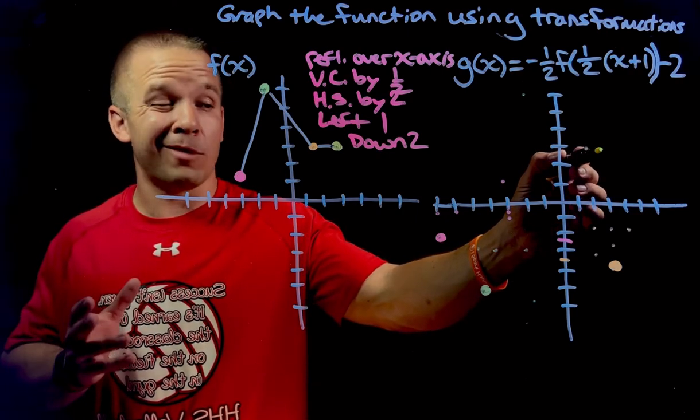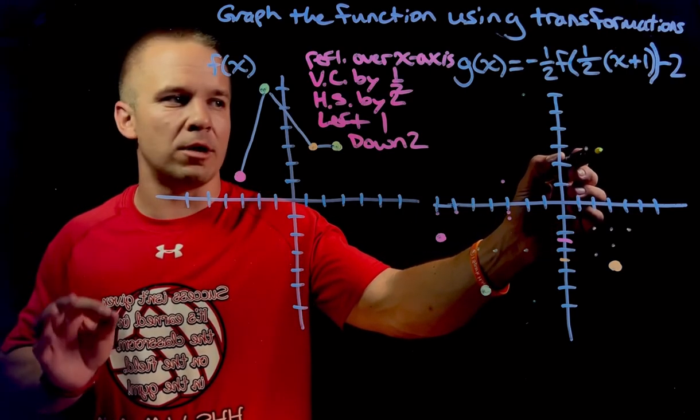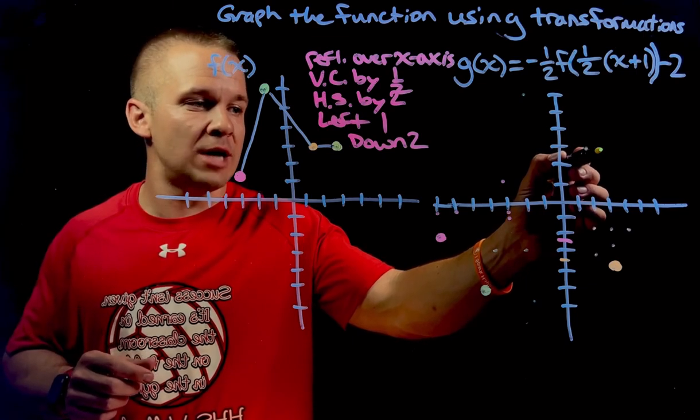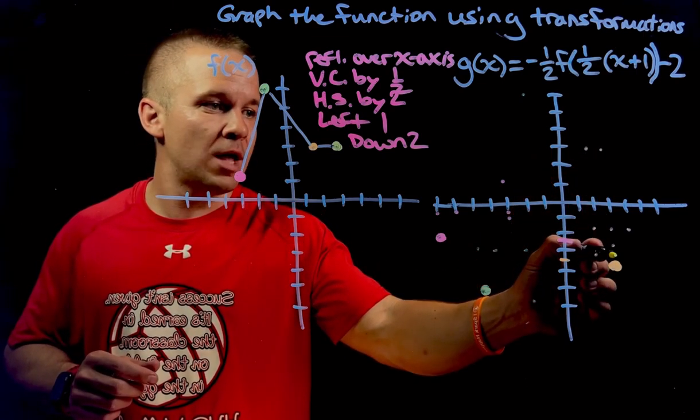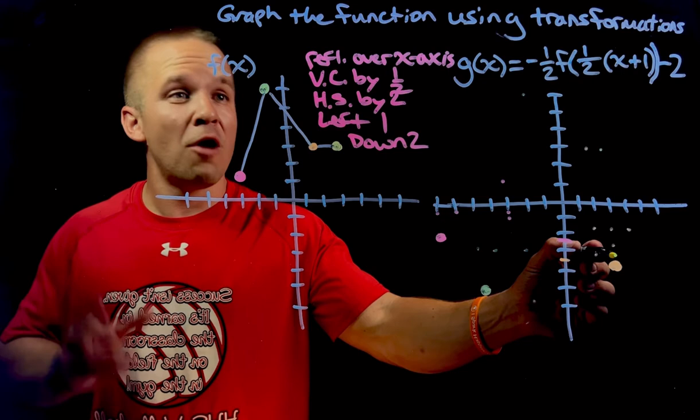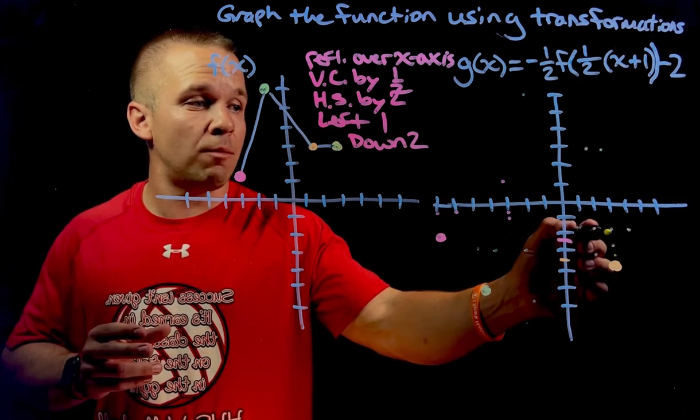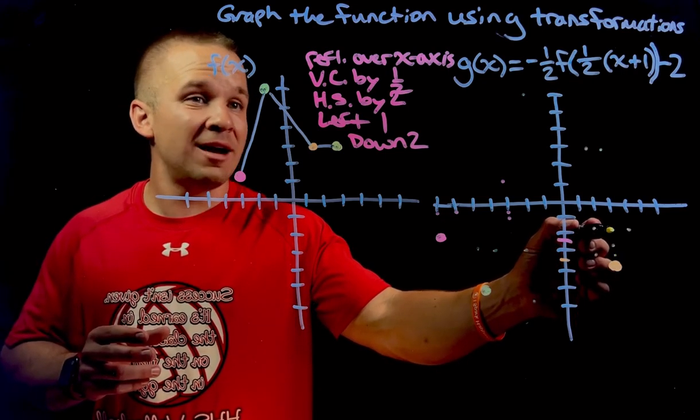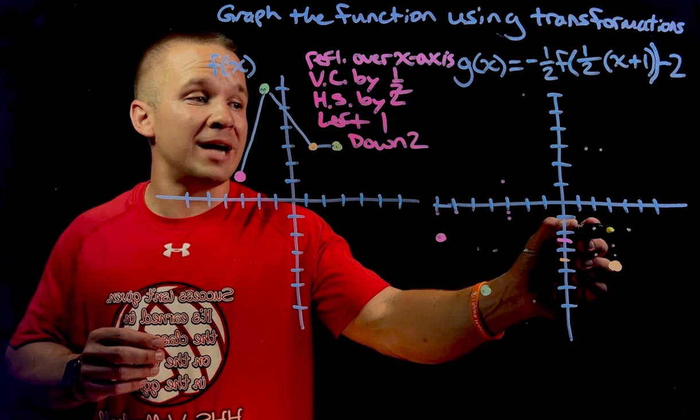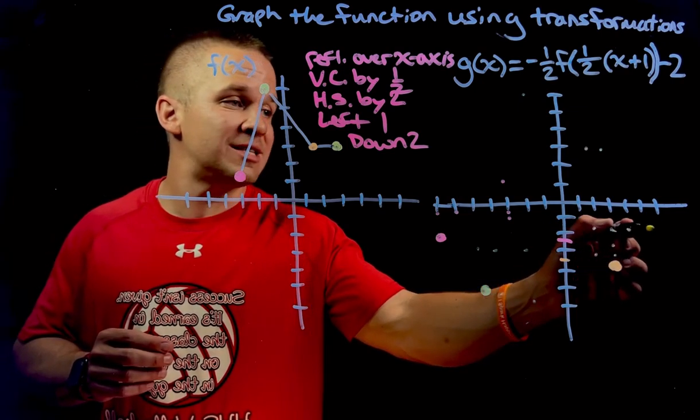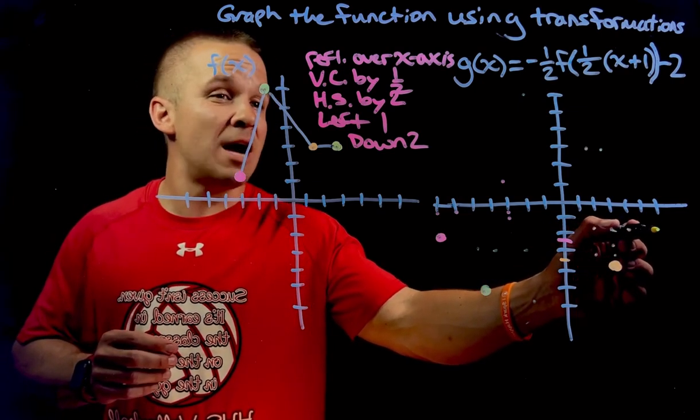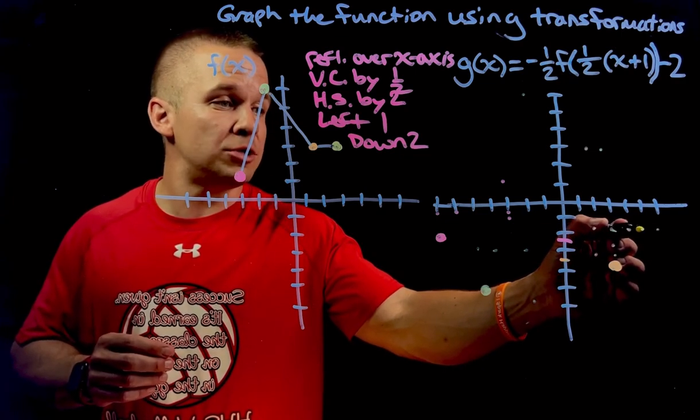So we're probably figuring out this right next to that other one, but let's see exactly where it is. I reflect first. So we're going to go down at negative three. Then I'm going to go vertical compression by one half. So I'm at that 1.5 spot. Then I'm going to do a horizontal stretch by two. So I'm all the way over at six. And then I'm going to go left one, and then down two.